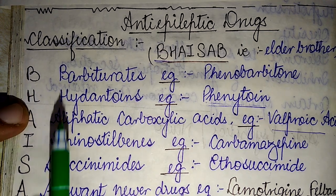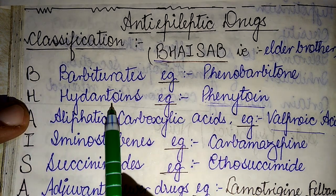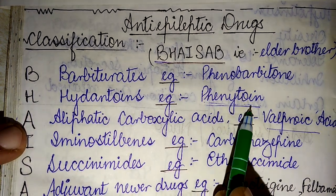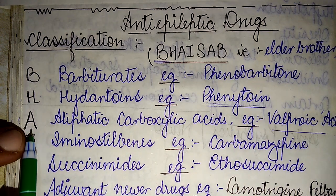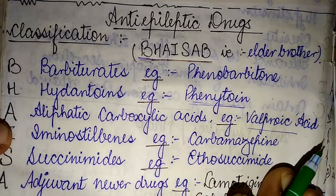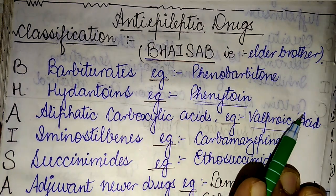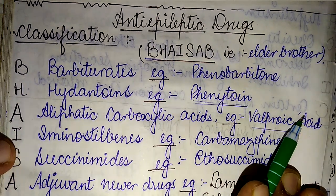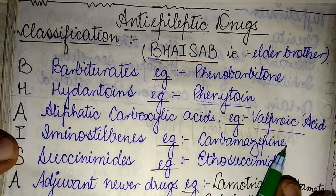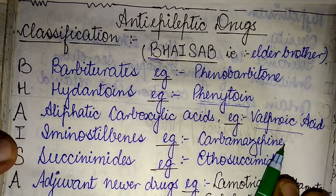Next, H stands for the hydantoins — example, phenytoin. A stands for the aliphatic carboxylic acids — example, valproic acid.